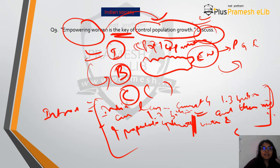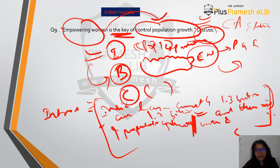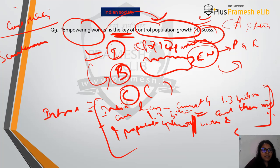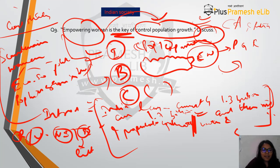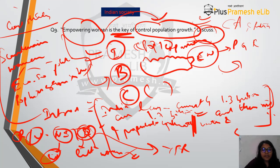Since the keyword is 'discuss,' you are asserting your answer. It was not 'critically analyze' or 'criticize,' so you cannot say women empowerment will not lead to population control. To make your answer much better, include a case study — for example, in Scandinavian countries where women are more empowered and more participatory in economic, social, and political life, population growth is also less. This is also true for India — comparing rural versus urban and north versus south shows a clear analogy.